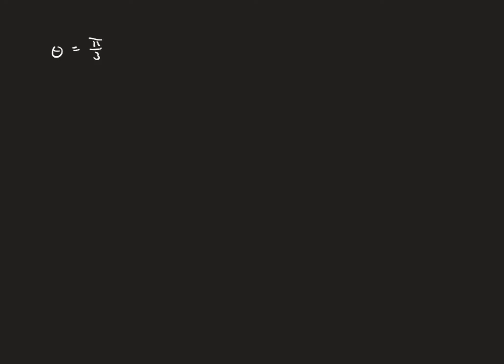Another example: theta equals pi over three, converting to rectangular. Using our conversion that theta is the inverse tangent of y over x, we substitute to get inverse tangent of y over x equals pi over three.